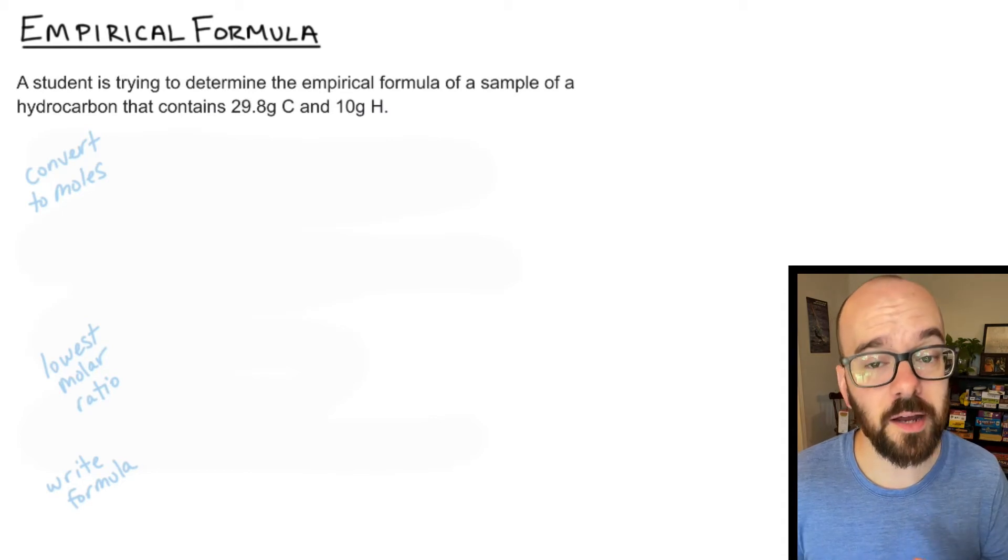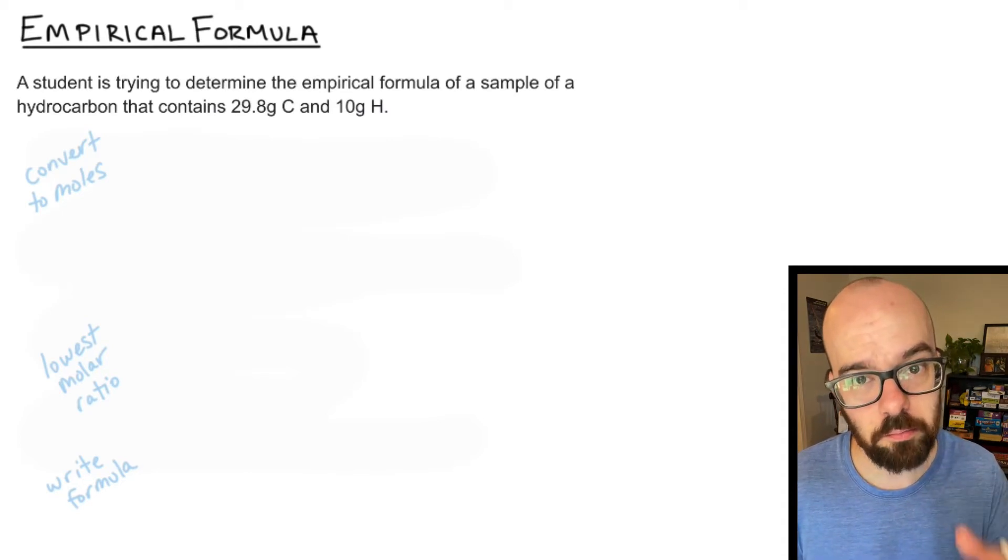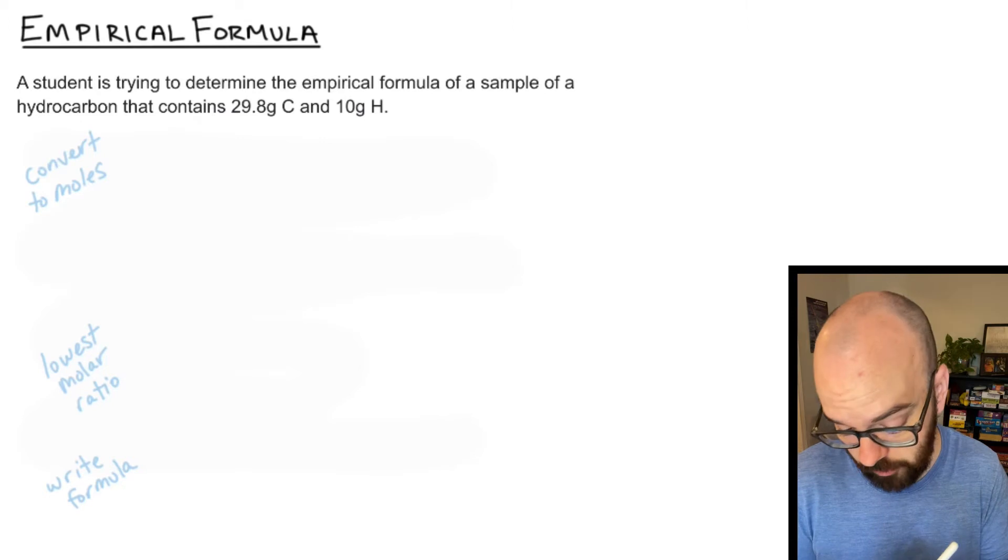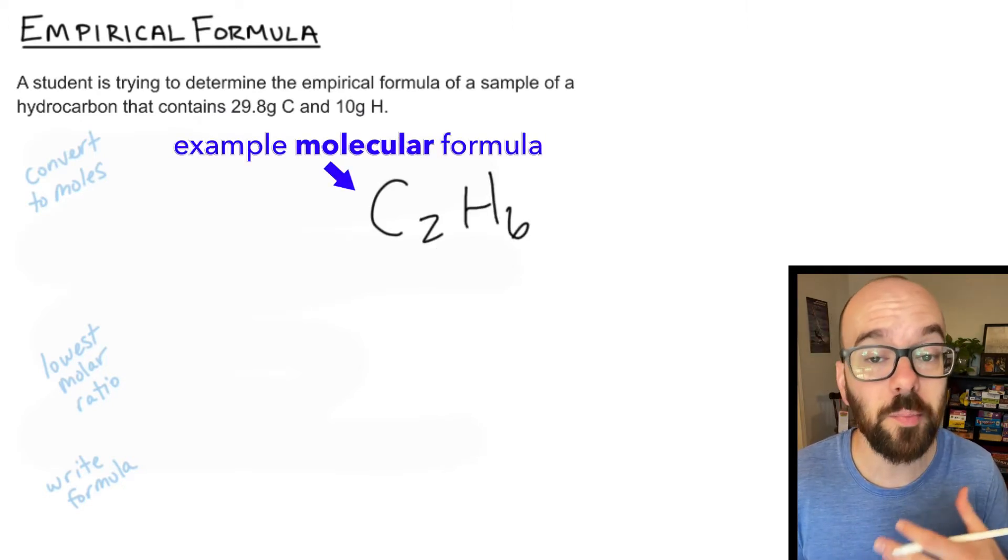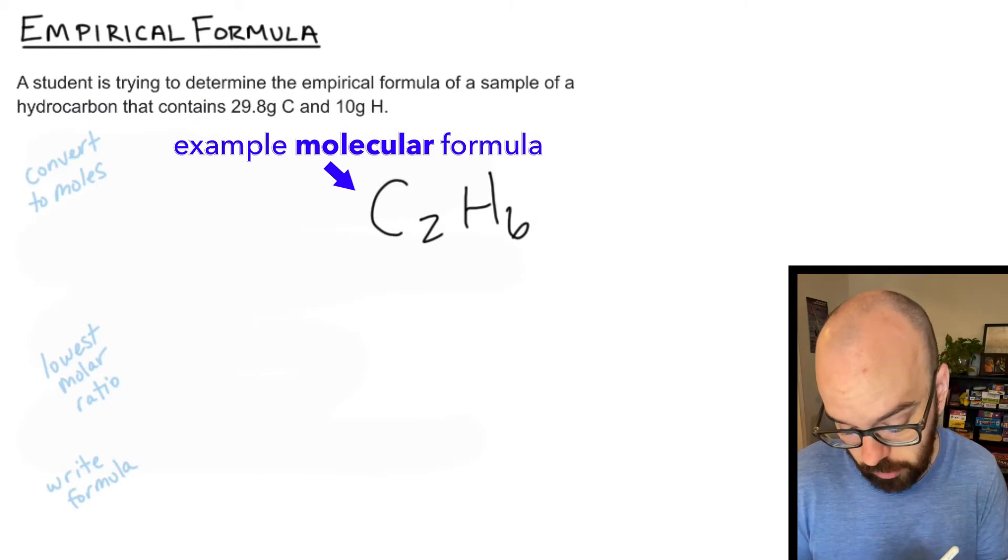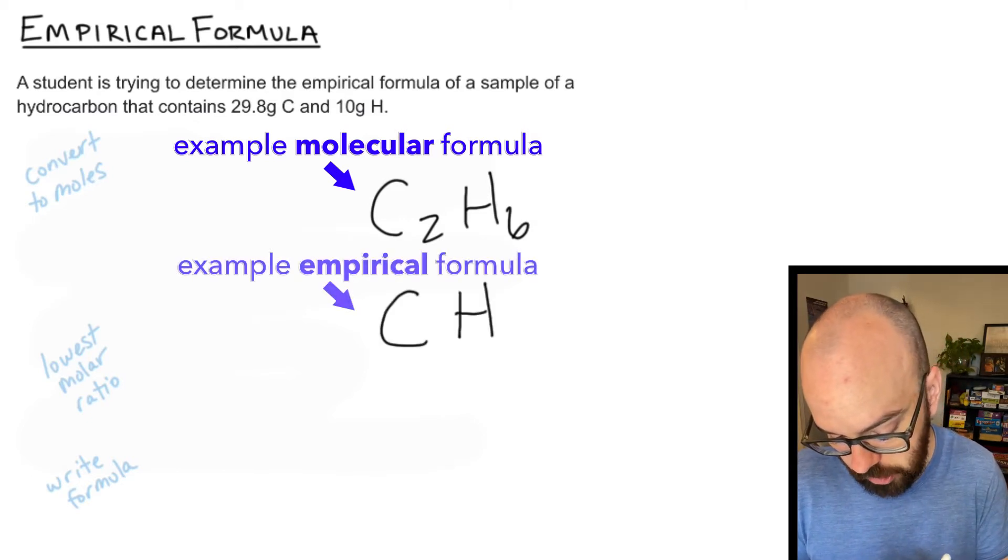When we say empirical formula we're talking about the formula that's in the lowest molar ratio. So let's say the compound was C2H6. Using this method we wouldn't be able to determine that but we would be able to determine the lowest molar ratio which would be CH3.